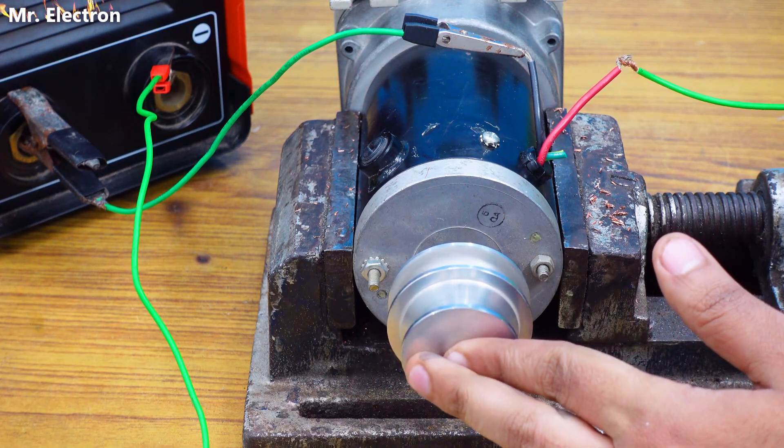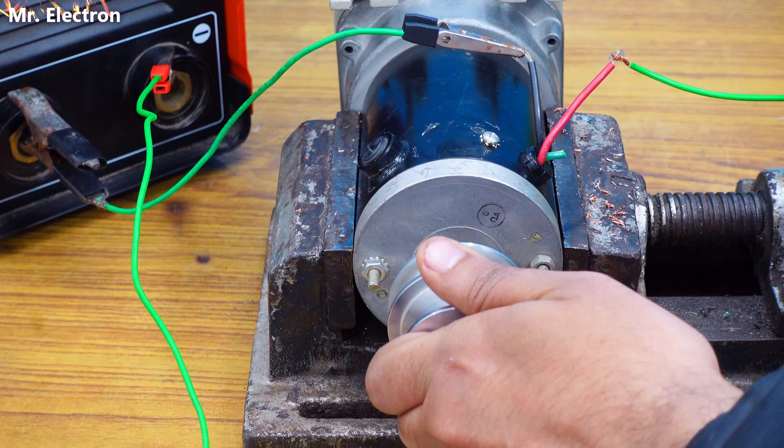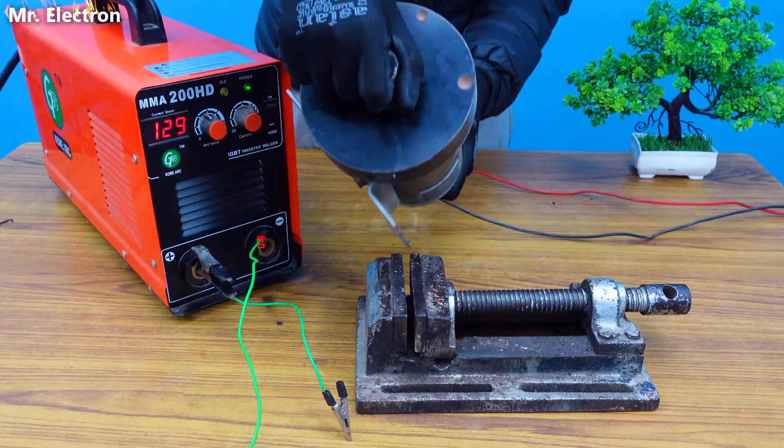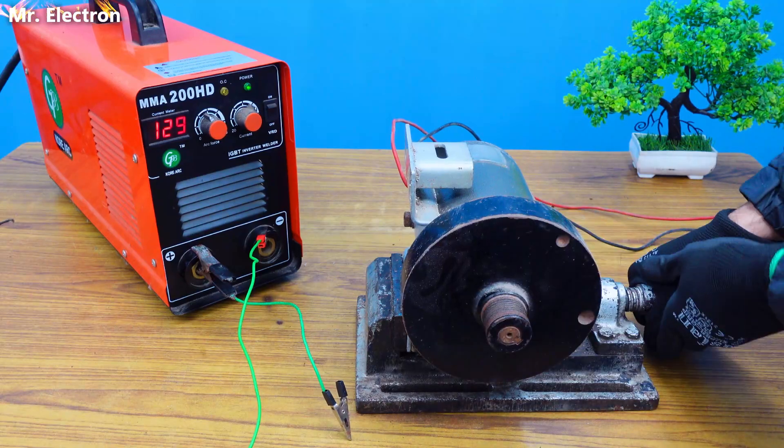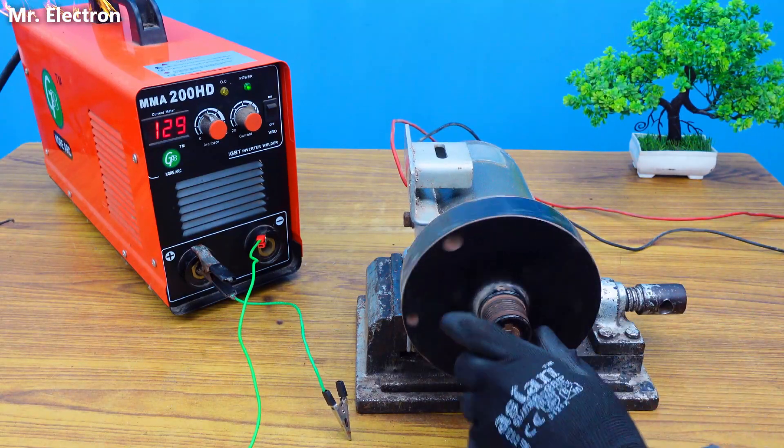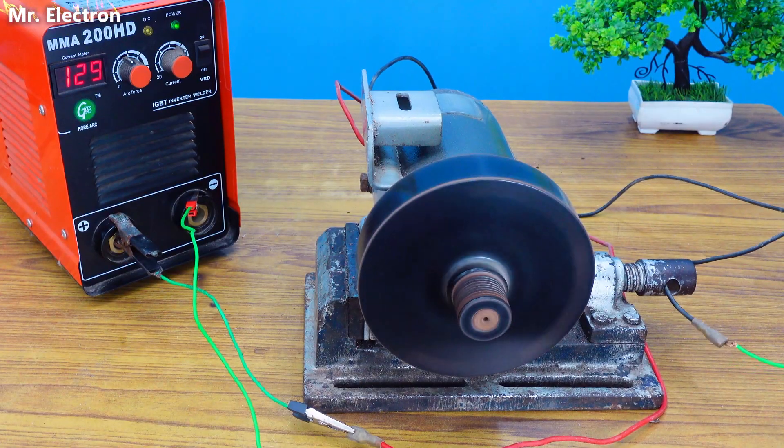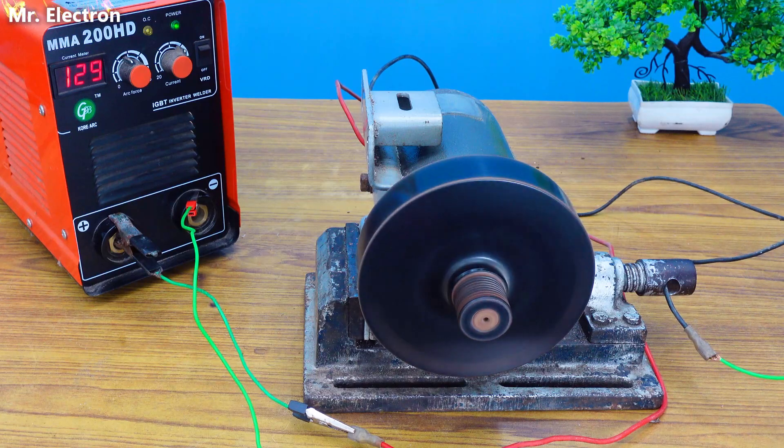Now this is a 180 volts permanent magnet treadmill DC motor. You can see the flywheel and here I am running it and it is running quite smooth, again not at full speed because the voltage is lesser than the rated, but it is running.